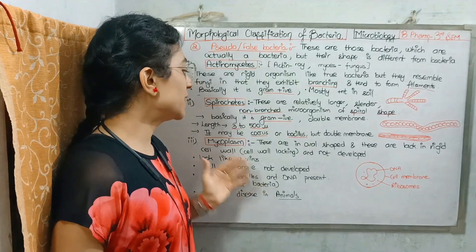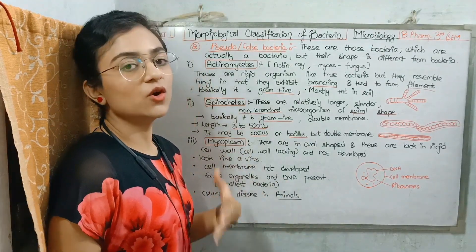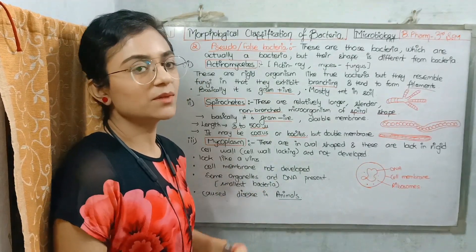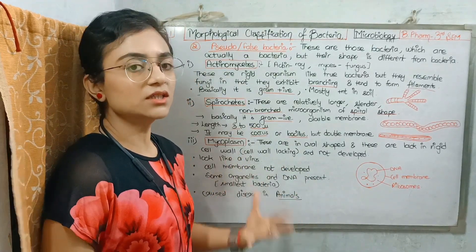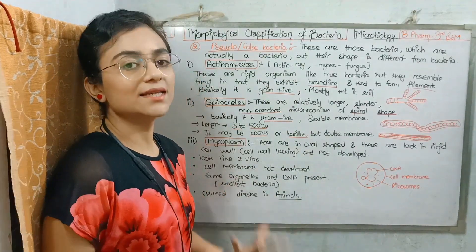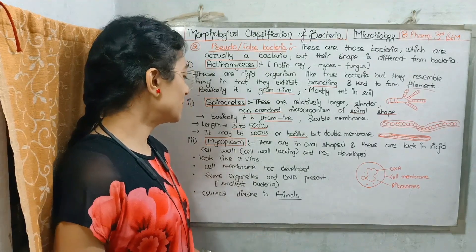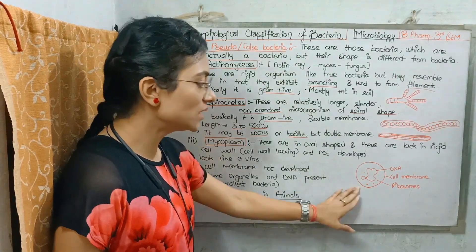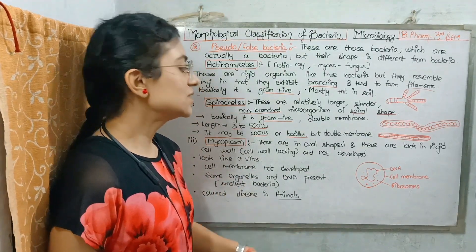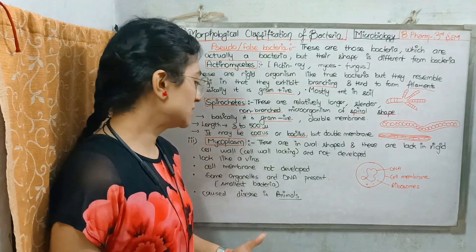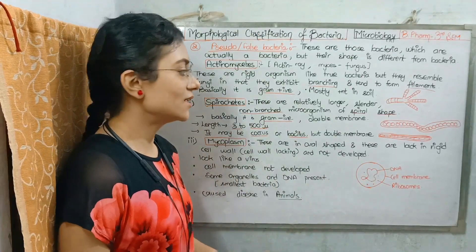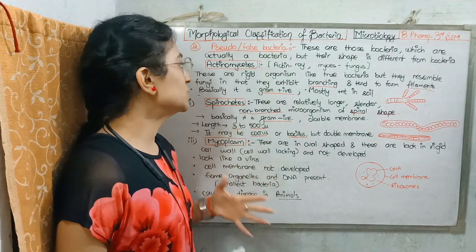Then there is Mycoplasma. Mycoplasma is oval in shape and it lacks a rigid cell wall. Because it doesn't have a cell wall, it resembles a virus. It has a cell membrane, some organelles, and DNA are present. It causes diseases in animals and plants.